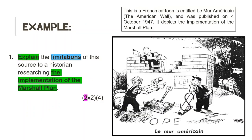Now back to our Level 3 Limitations question. If we look at the mark allocation, how many facts do we need to include in our answer? If you said two, then you are 100% correct — because the mark allocation says two times two. So now we are finally ready to give our answer.